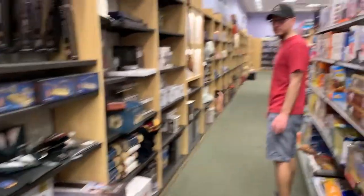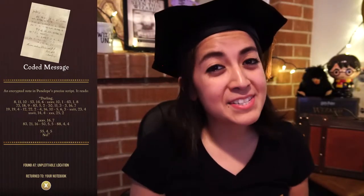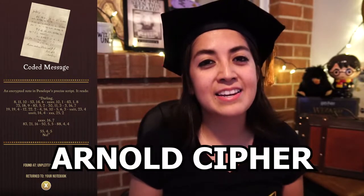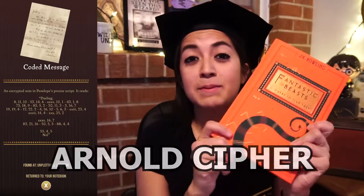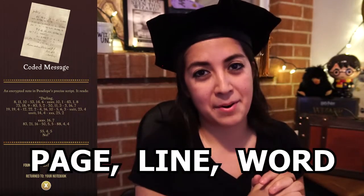If you missed part one of this series, be sure to click in the description down below. Jeff and I were searching for this book because this is the key for us to decode the message in this video. The cipher we're talking about today is a book cipher called the Arnold Cipher where we need a key that is a specific book and the code is written in trios where we have page, line number, and word number.